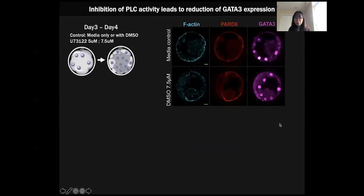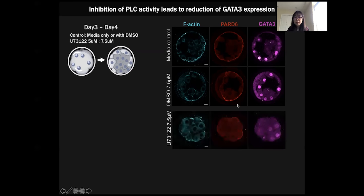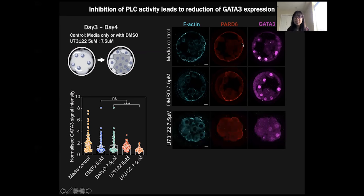What's going to happen if you disrupt polarity? We treated with PLC inhibitor between day 3 and day 4 of human development. We found that in the control scenario, you've got the Par complex to polarize to the outer cells and also a lot of GATA3 expression. But in the PLC-inhibited embryo, they lose polarity and also give rise to a strong reduction in GATA3 expression. This result suggests that polarity might be important for trophectoderm specification in the human embryo, similar to that of the mouse.